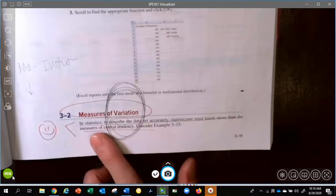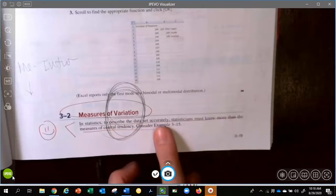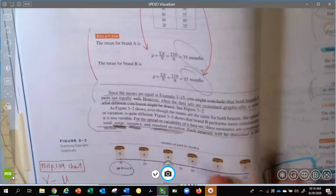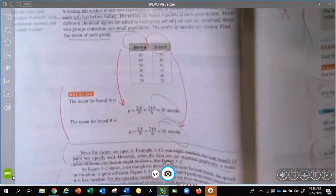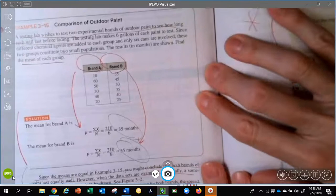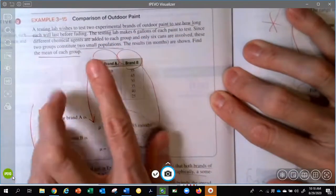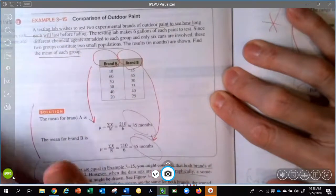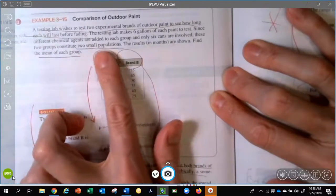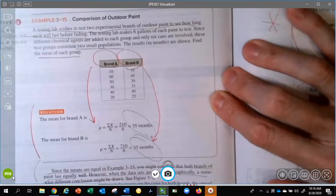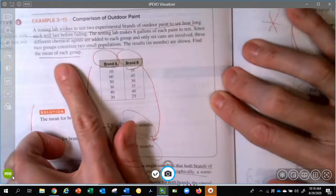Measures of variation. In statistics, to describe the data set accurately, statisticians must know more than the measure of central tendency, which is what we looked at in our last section. So it starts us out with this really cool example. It talks about comparison of outdoor paint. There's a testing lab and they want to see how long it's going to last before fading. They have two small populations. That's going to be really important that you keep understanding if we're dealing with a population or a sample because our symbols are going to be different.